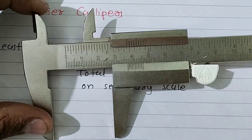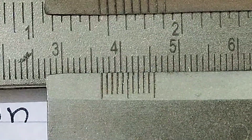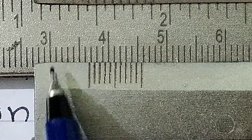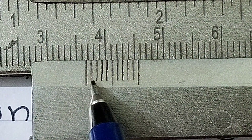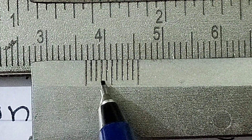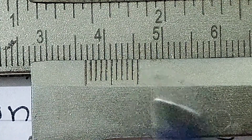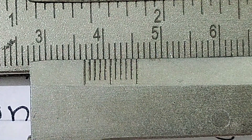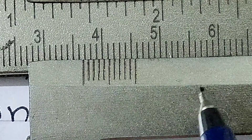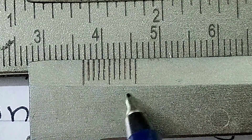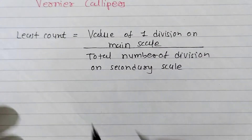This is my secondary scale. Starting from 0 here: 1, 2, 3, 4, 5, 6, 7, 8, 9, 10 — a total of 10 divisions. It starts from 0 and ends at 10.